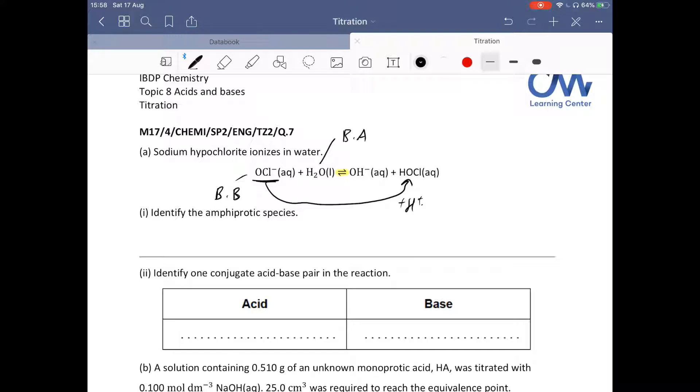Part 1. Identify the amphiprotic species. Amphiprotic species, the definition is it can accept and donate a hydrogen ion, which means it can act as a Bronsted-Lowry base and also a Bronsted-Lowry acid. So actually, water is an amphiprotic species.